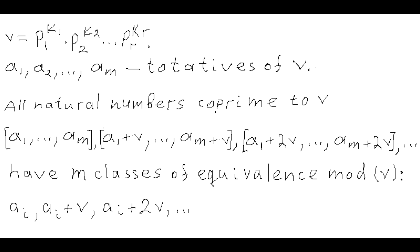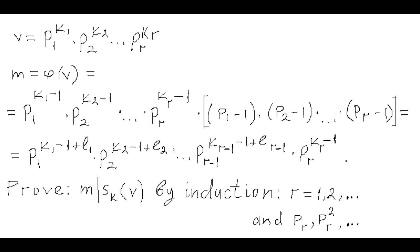Each sequence a1, a1+v, a1+2v, etc. is an arithmetic progression in which all members are called equivalent modulo v. So the entire set of natural numbers coprime to v can be partitioned into m equivalence classes modulo v. Numbers v described in this problem are restricted to those whose Euler's totient function phi of v has the same prime factors as the original number v. We'll prove this by induction, increasing the number r of prime numbers in the prime decomposition of v, starting with r equals 1.